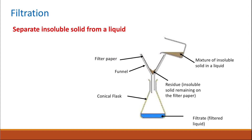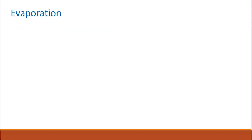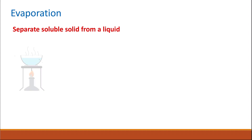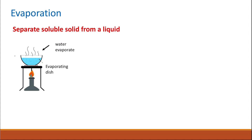This method is used if you want to separate an insoluble solid from a liquid. And then there is evaporation, which is used to separate a soluble solid from a liquid. In evaporation, you simply put your solution in an evaporating dish and heat it using the Bunsen burner. The water will completely evaporate from the solution until only the solid remains. You then take it off the burner and leave it to dry completely before collecting your solid.